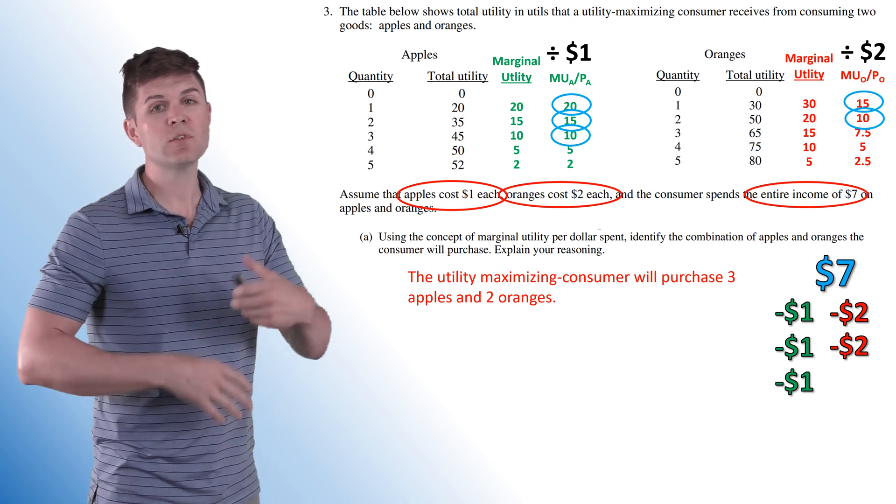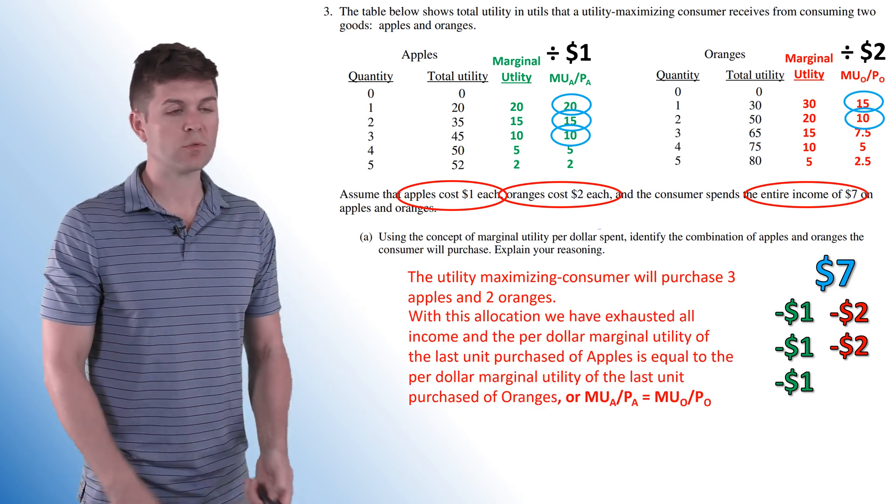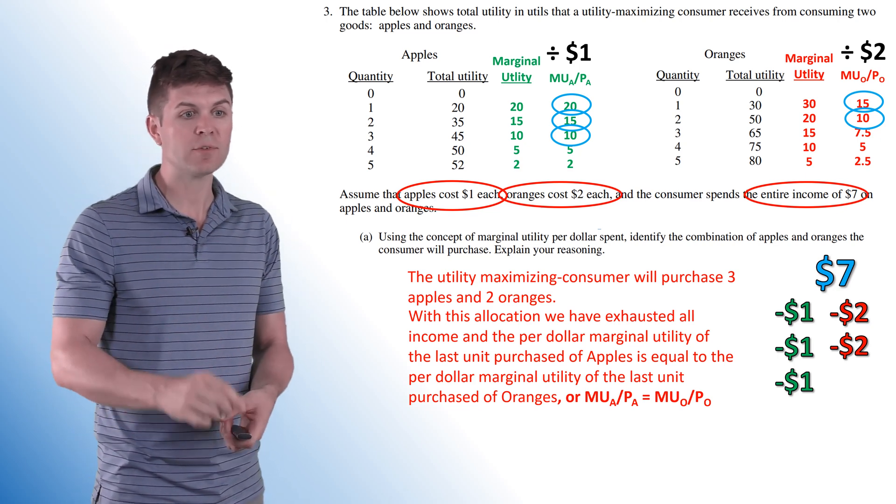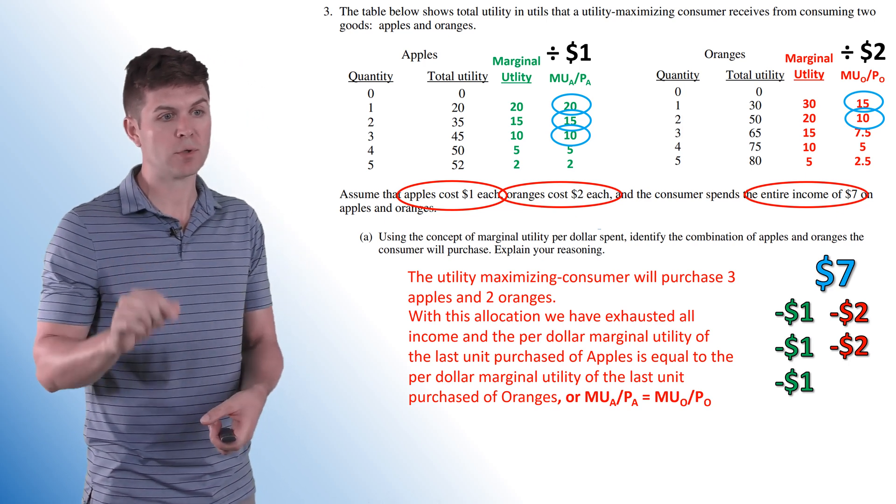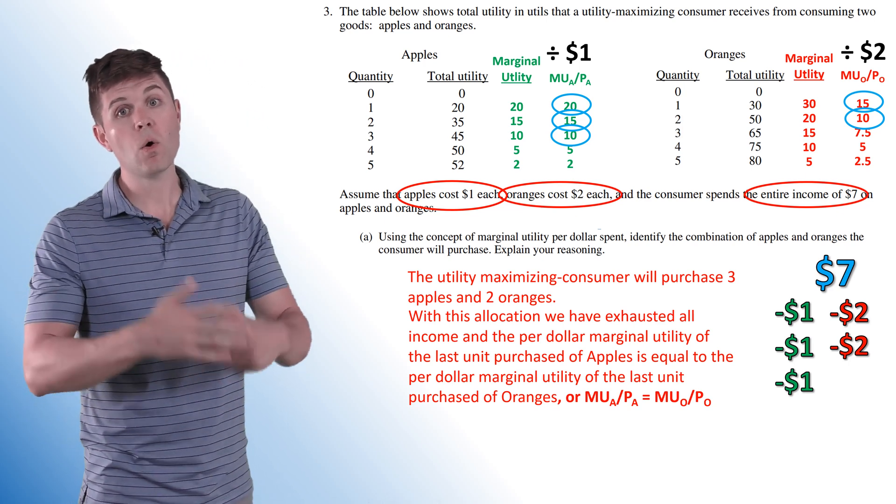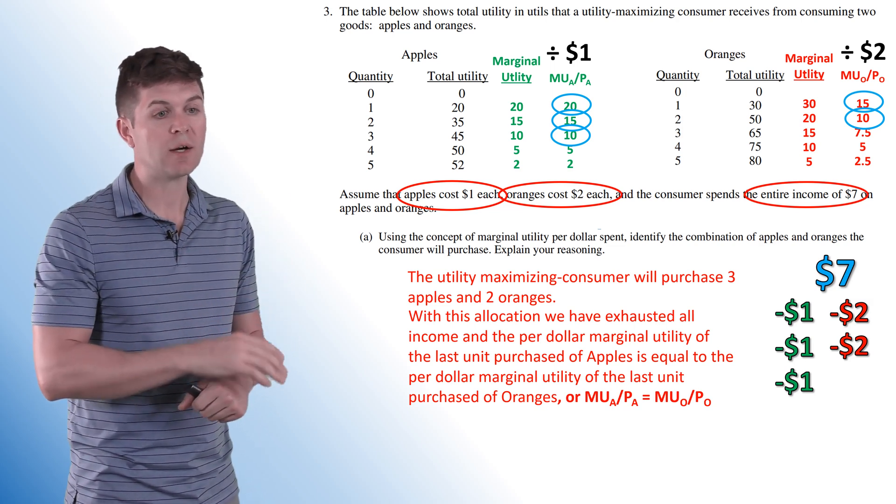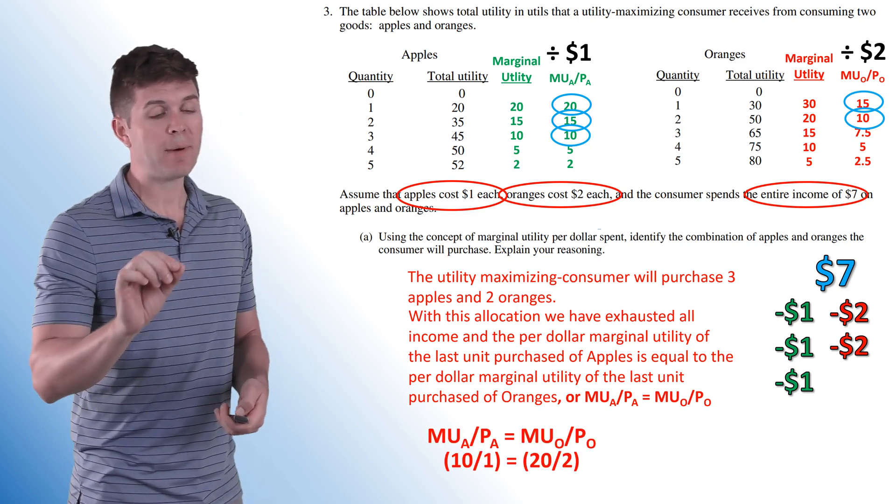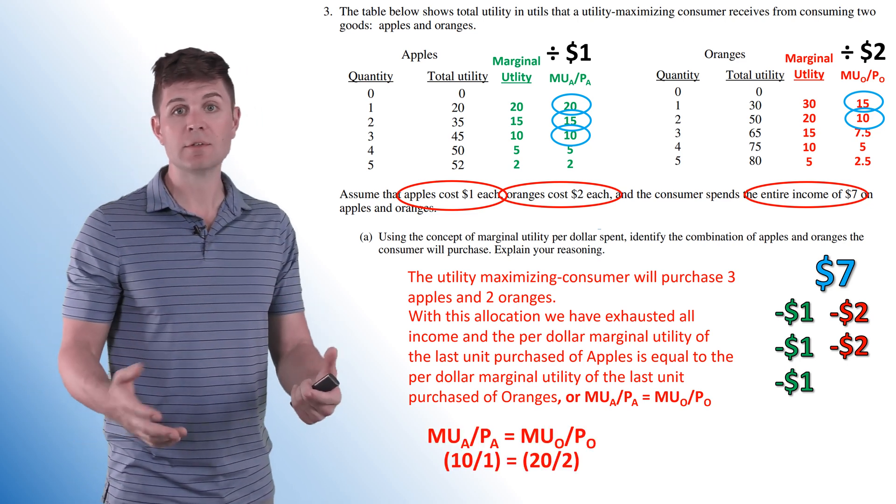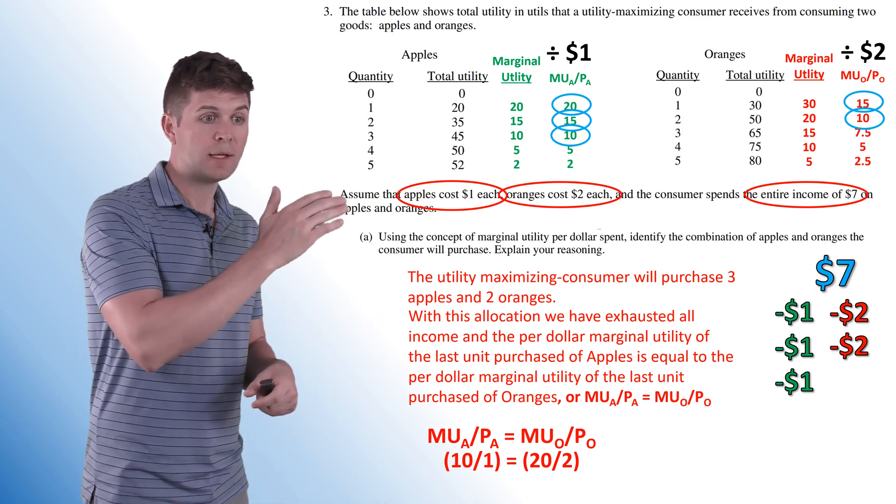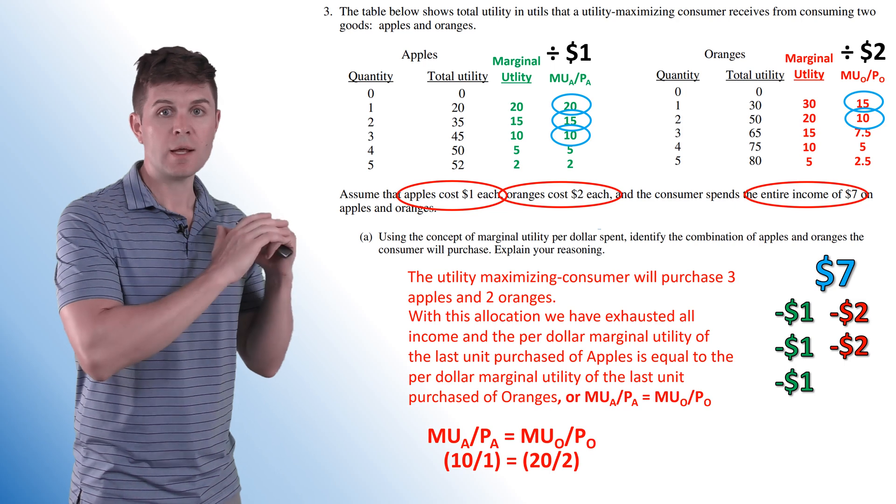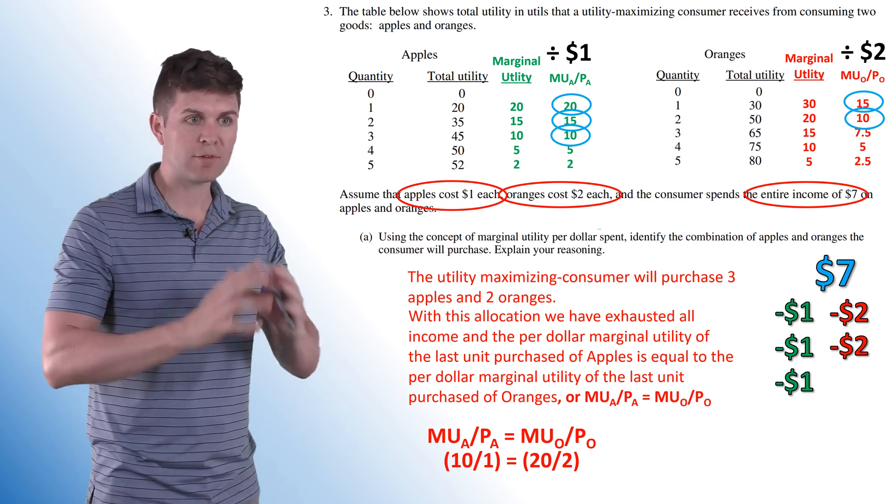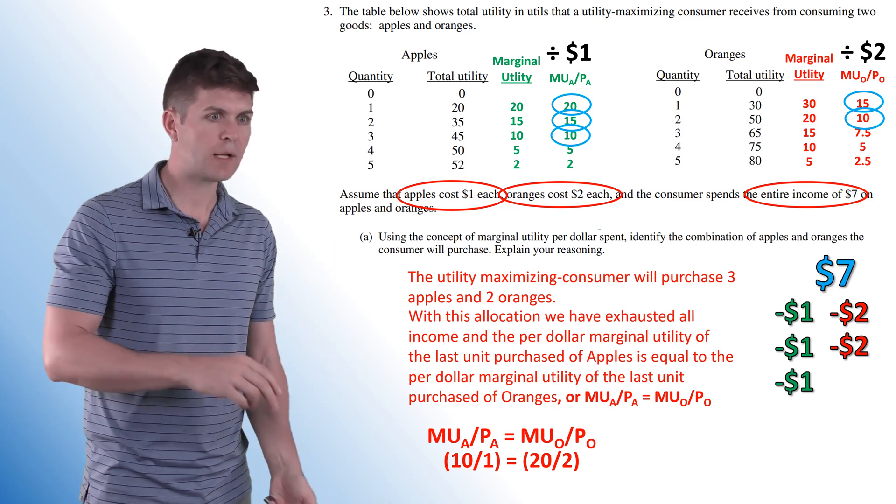Explain your reasoning. This is where it gets a little more complex, but there's a few different ways you can throw this out there. With this allocation, we have exhausted all income and the per dollar marginal utility of the last unit purchased of apples is equal to the per dollar marginal utility of the last unit purchased of oranges, or the marginal utility, throw that equation out there. That would work as well. To add a little bit more to make your answer a little bit better, you might want to throw something like this out there just to give the actual numbers to show that 10 divided by one is equal to 20 divided by two. The last marginal utility divided by the price of each last unit. This would kind of solidify all the points for this answer.